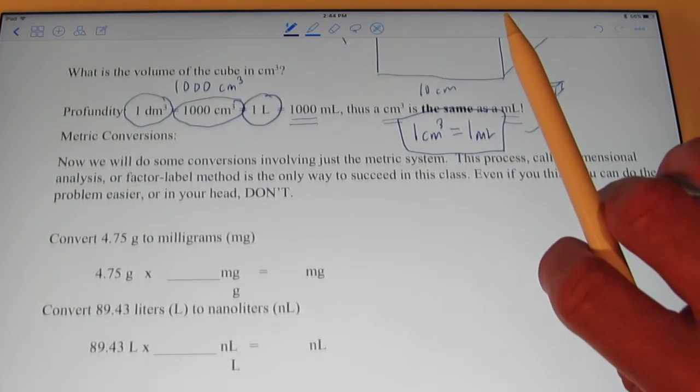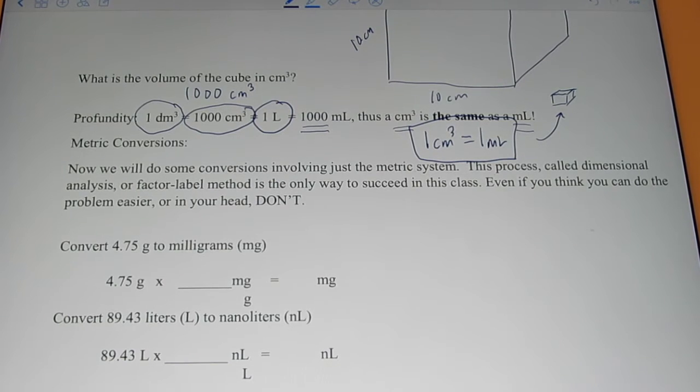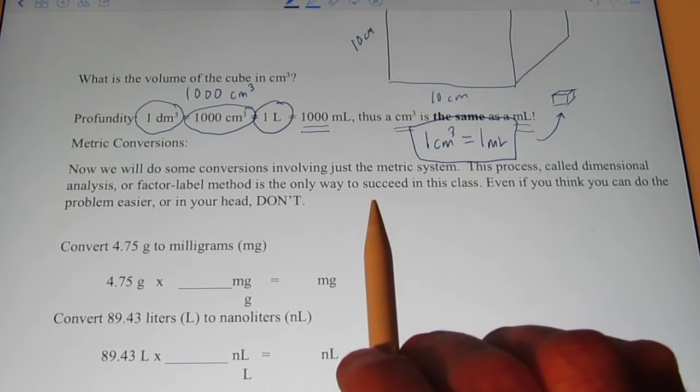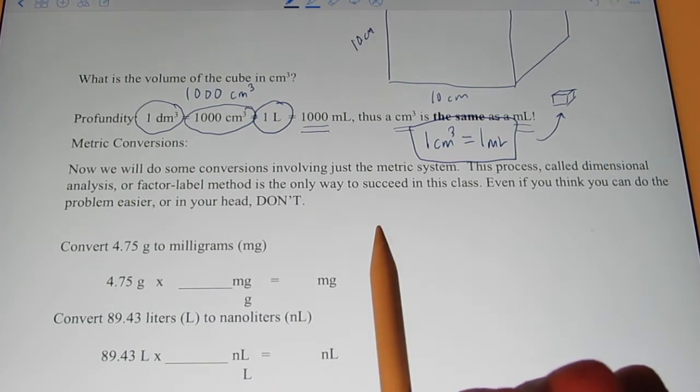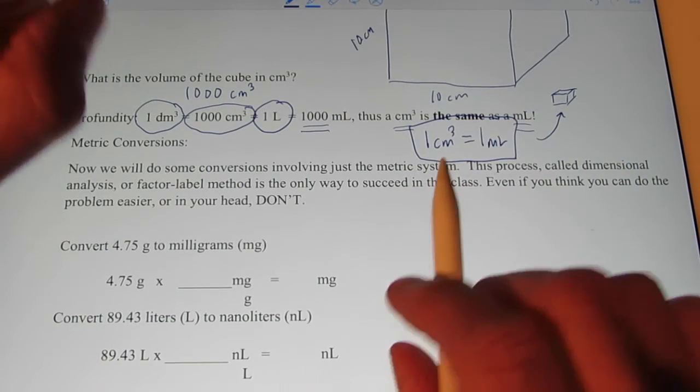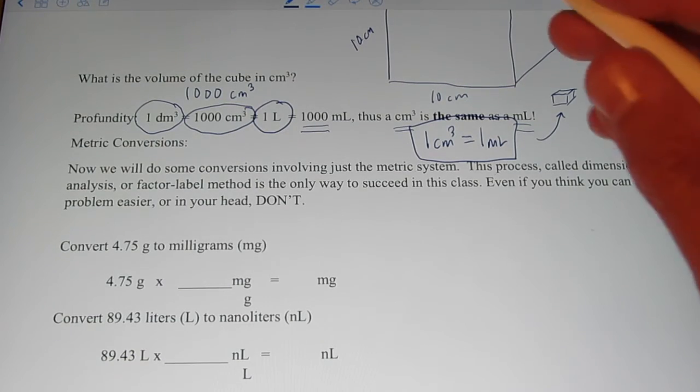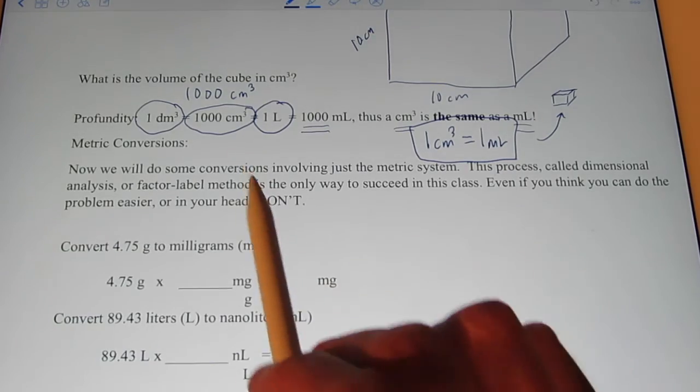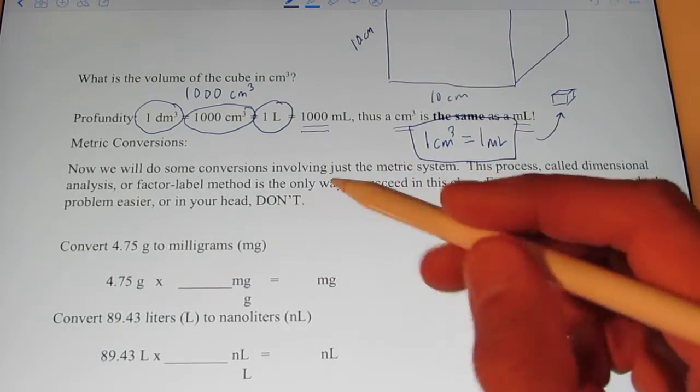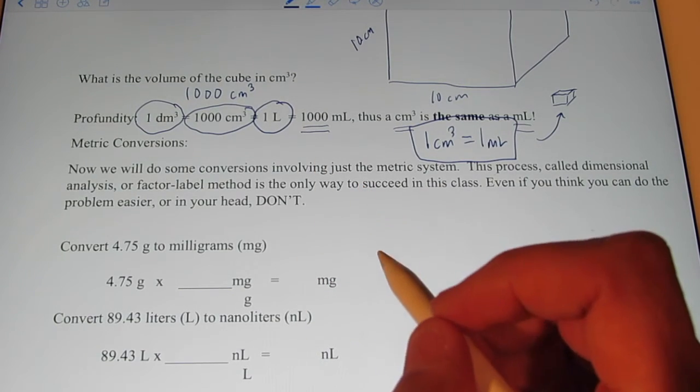Now, we are going to do some conversions within the metric system. The process we're going to learn today is called dimensional analysis. Some teachers and textbooks call it the factor label method. It's the only way to be successful in this class as far as math is concerned. Even if you think you can do the problem easier, or in your head, don't do it. Do it this way, this dimensional analysis way.